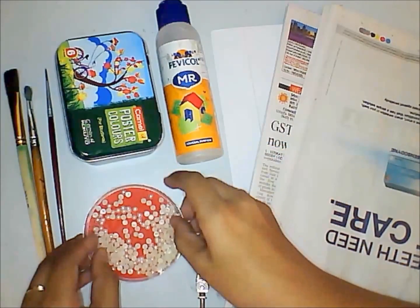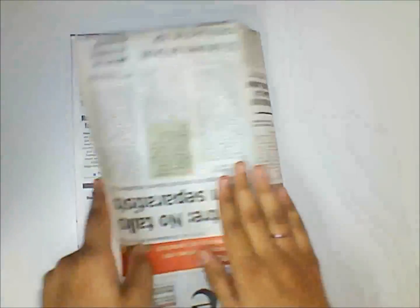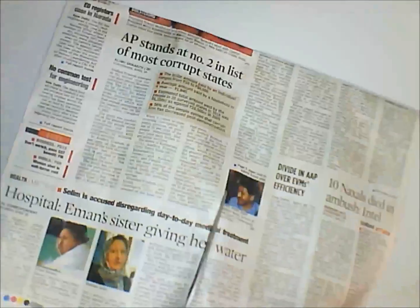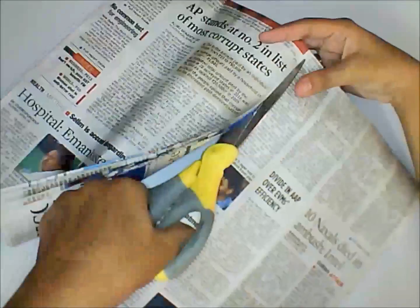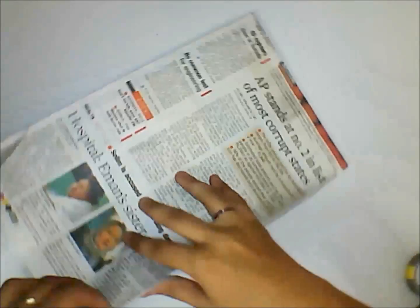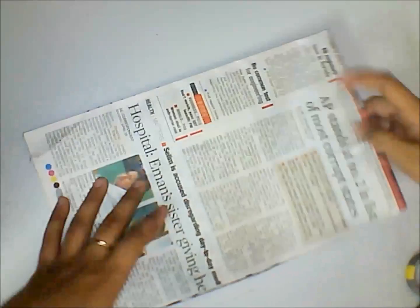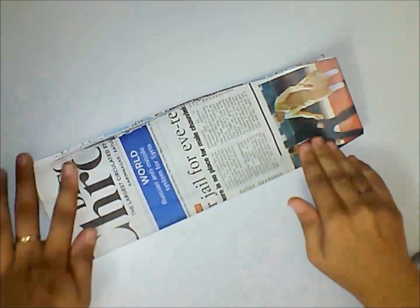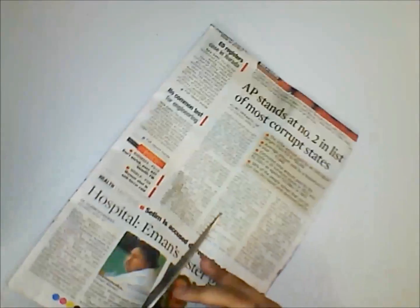Let us take the newspaper and fold it into half, then make a cut along the fold. The half of the newspaper looks something like this. Now again fold it into half and cut it along the fold using a pair of scissors.